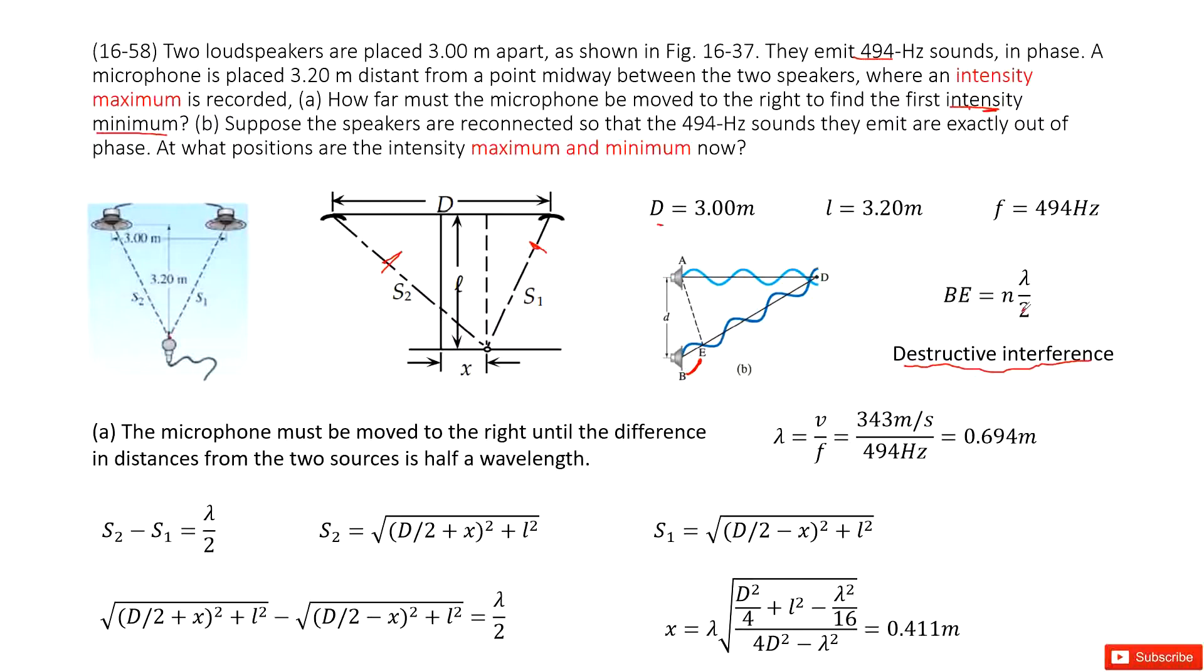And we take the minimum. So n take 1. So that means S2 minus S1 must equal to lambda divided by 2, because these two waves A and B are in the same phase.